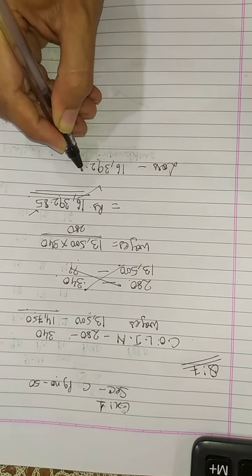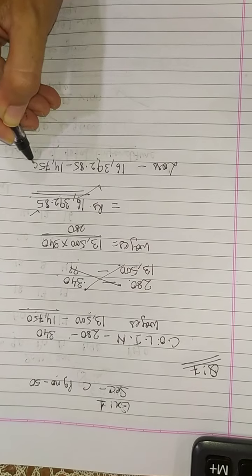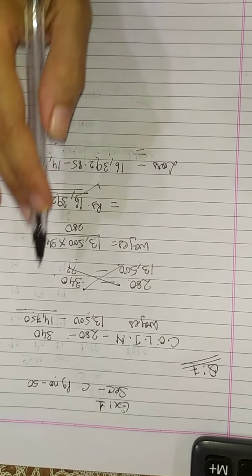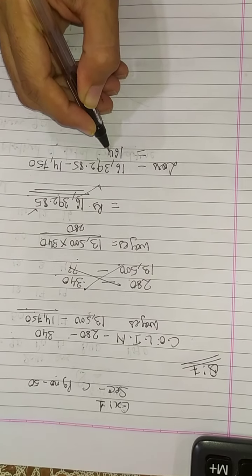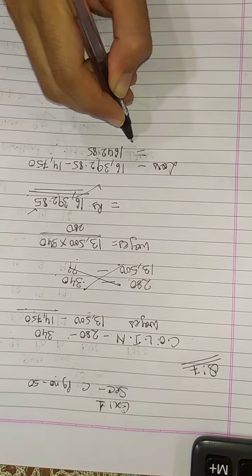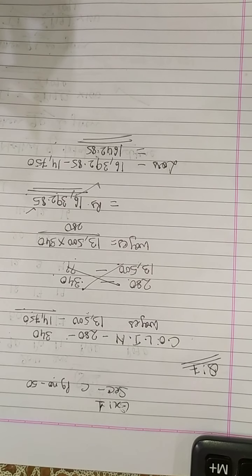In dono ka jo difference hai, that is the loss to the worker, 1,642.85. It's the loss to the worker.